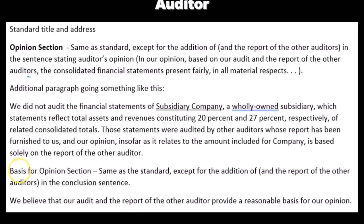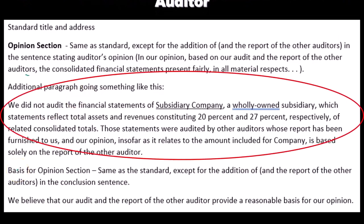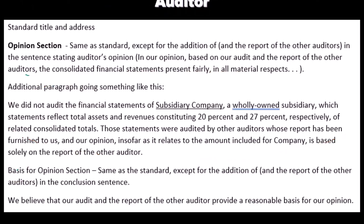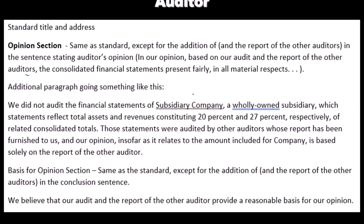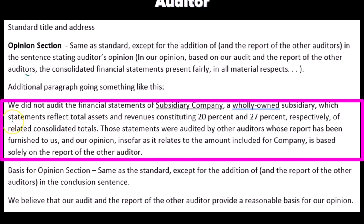The additional paragraph would look something like this — this is just an example of the type of language that might be included; it will be dependent on the circumstances. 'We did not audit the financial statements of the subsidiary company — a wholly owned subsidiary — which statements reflect total assets and revenue constituting 20% and 27% respectively of the related consolidated totals. Those statements were audited by other auditors whose report has been furnished to us.'